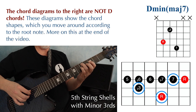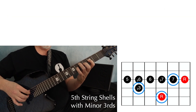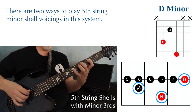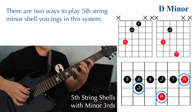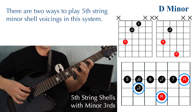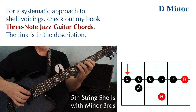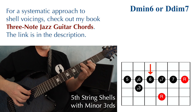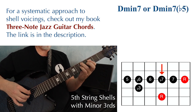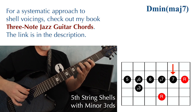Moving that third string note one fret higher gives a D minor major seven. Moving it again gives another D minor triad, but this time with root, flat three, and another root on top. Here's the whole sequence: D minor, D minor flat six, D minor six — which could also be used as D diminished — D minor seven — which could also be used as D minor seven flat five or D half diminished — D minor with major seven, and then another D minor.